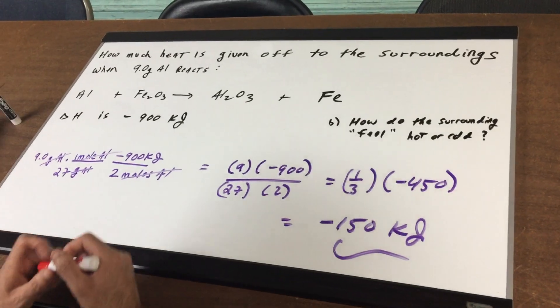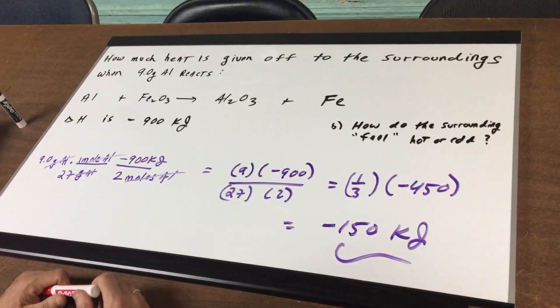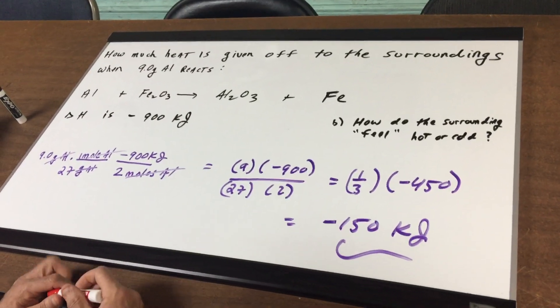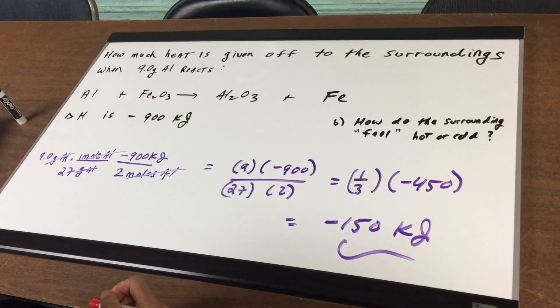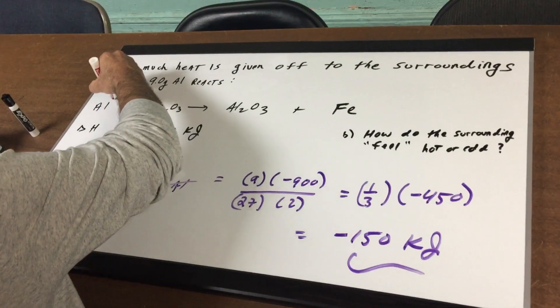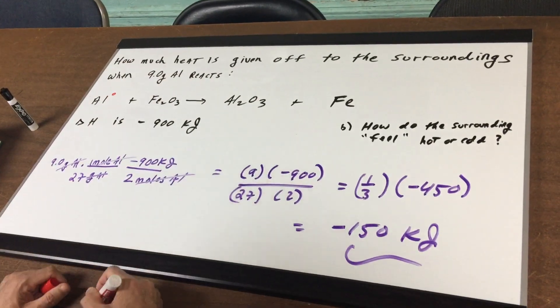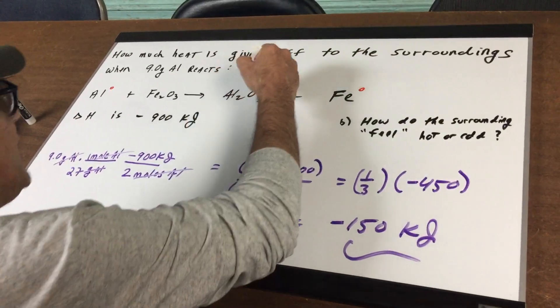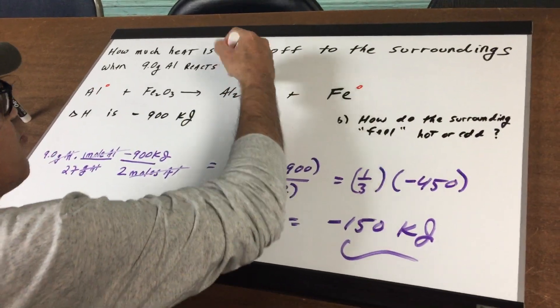Now, you should also have an understanding that it's not only a single replacement reaction, but this is a redox reaction. Why is it a redox reaction? Well, this is standing all alone, so it has a charge of zero, and this has a charge of zero. In this compound, if you crisscrossed, you would see that the aluminum has a plus three charge here.